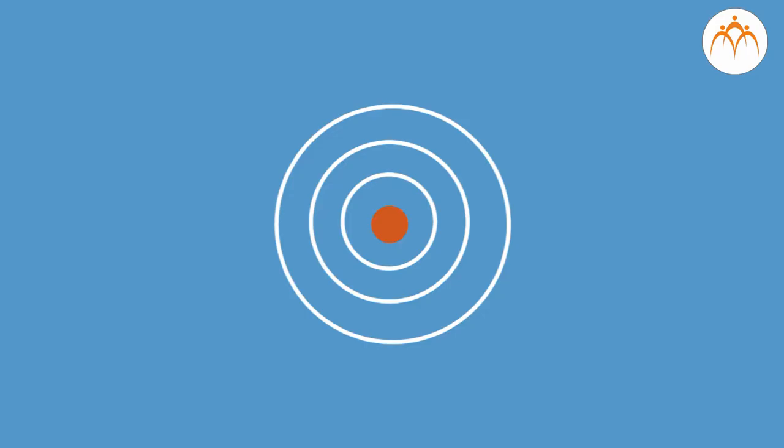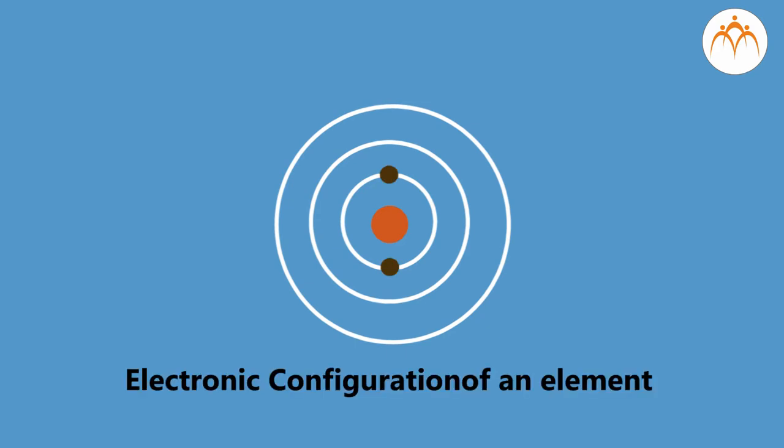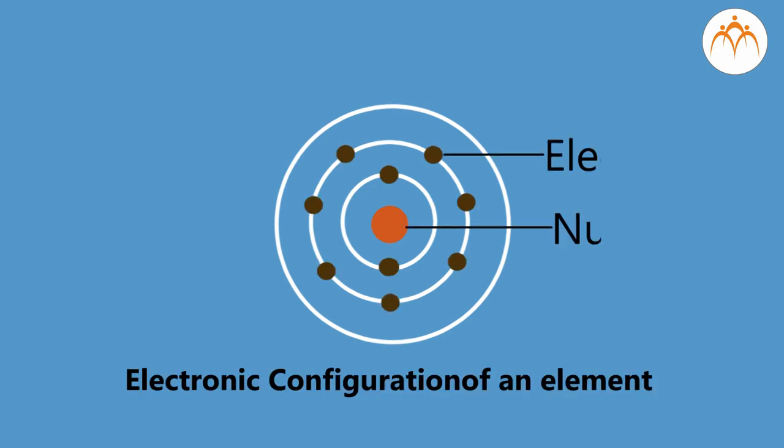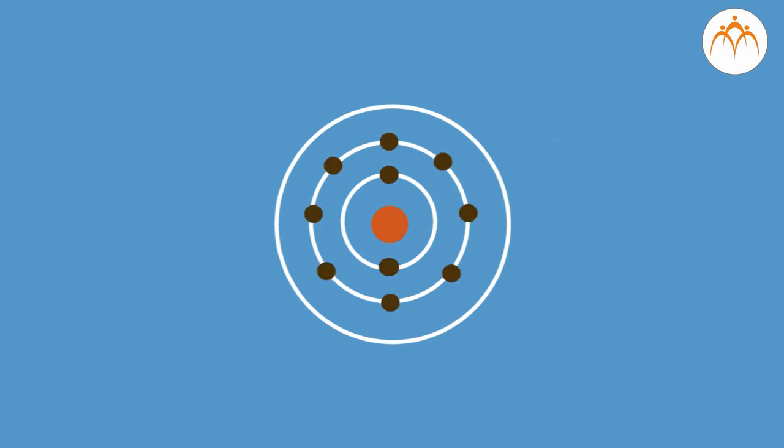The shell-wise distribution of electrons in an atom of an element is called the electronic configuration of that element. The maximum number of electrons that can be accommodated in the outermost orbit is eight for shells two onwards. If the first orbit is the outermost orbit, it can accommodate a maximum of two electrons — for example, hydrogen and helium. Let's apply these rules to get the electronic configuration and number of electrons, protons, and neutrons in particular elements.